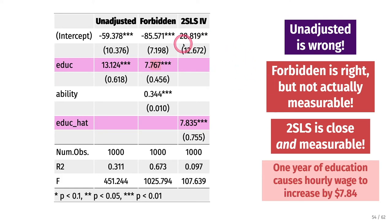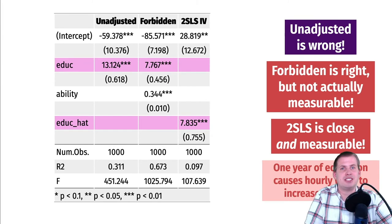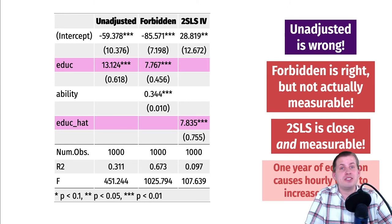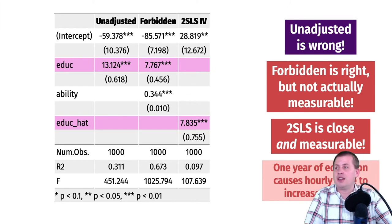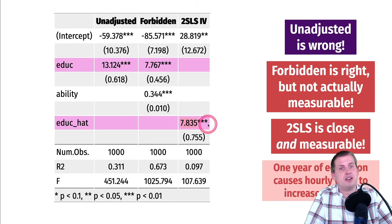This is purely observational data — no experiments, no treatment group, no control group — yet we were able to find the causal effect of education on earnings using the instrument. It works here because it's all fake data. In real life, father's education doesn't work that well as an instrument, but we're pretending it does. That's basically the process: first stage generates education-hat from the instrument, second stage uses education-hat to estimate the purely exogenous effect on earnings.